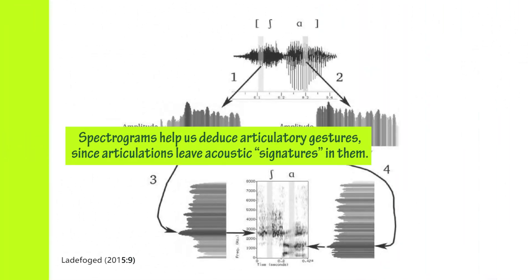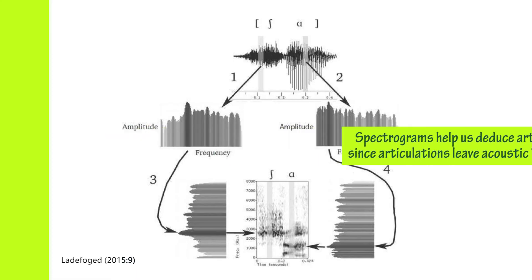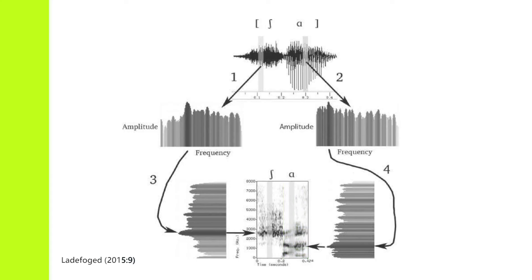Spectrograms help us deduce articulatory gestures since articulations have acoustic signatures. For example, 'shah' is noticeably different. With such comparisons, one can train the eye to recognize sounds instantly.